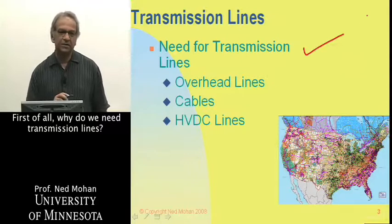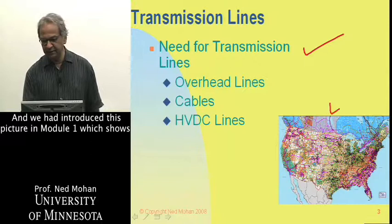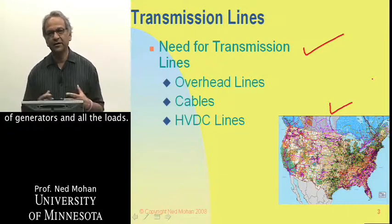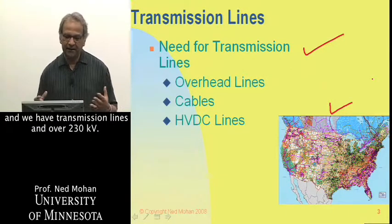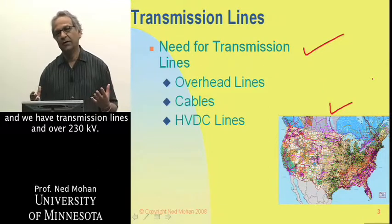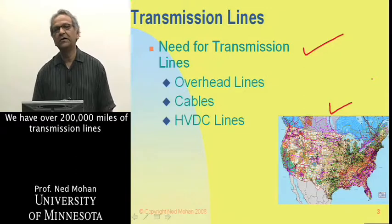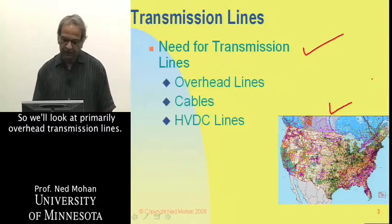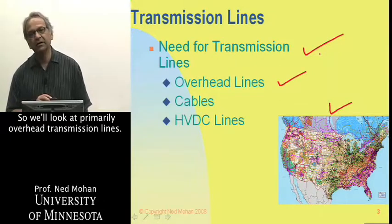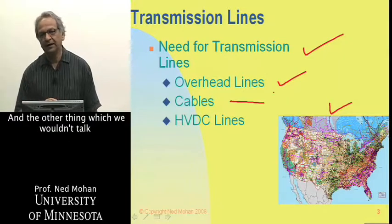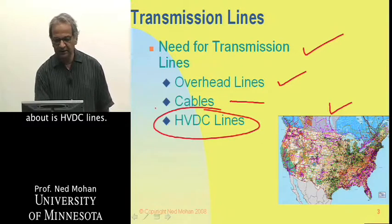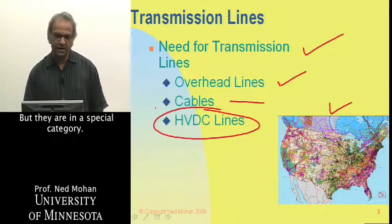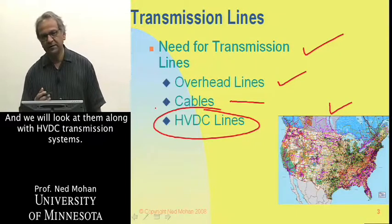Why do we need transmission lines? We introduced this picture in module one, which shows that all these lines interconnect tens of thousands of generators and all the loads. We have distribution lines and transmission lines, and over 230 kV, we have over 200,000 miles of transmission lines in North America. We'll look primarily at overhead transmission lines, and talk a little about cables. We won't cover HVDC lines here — they are in a special category and will be addressed along with HVDC transmission systems.